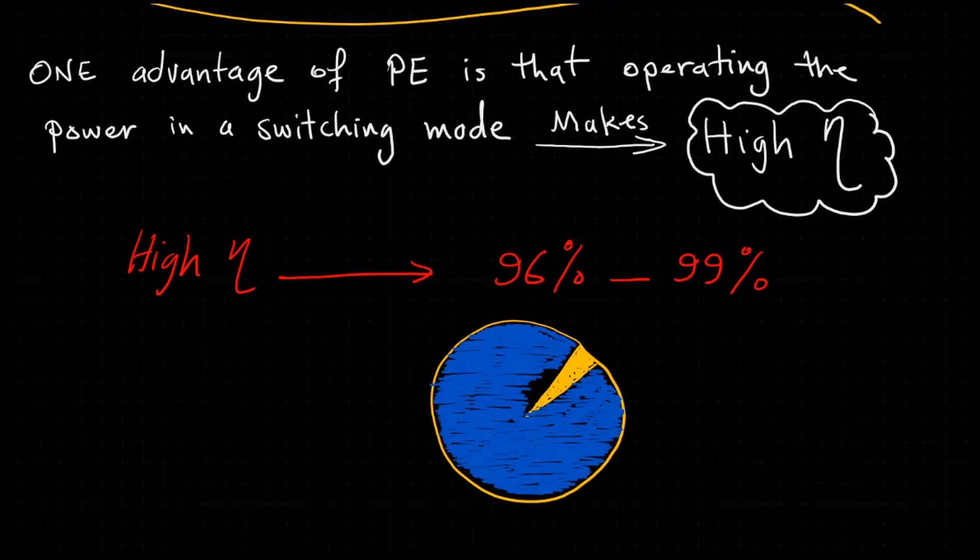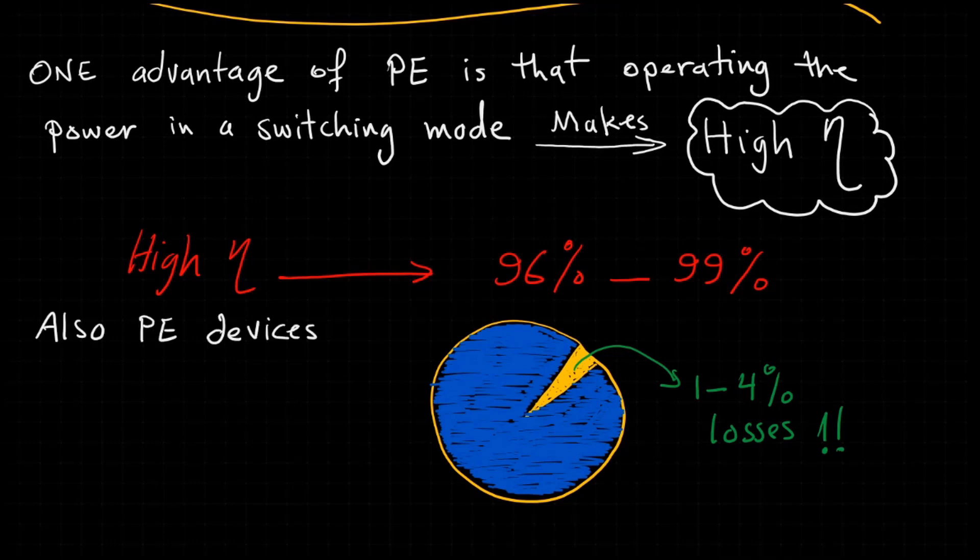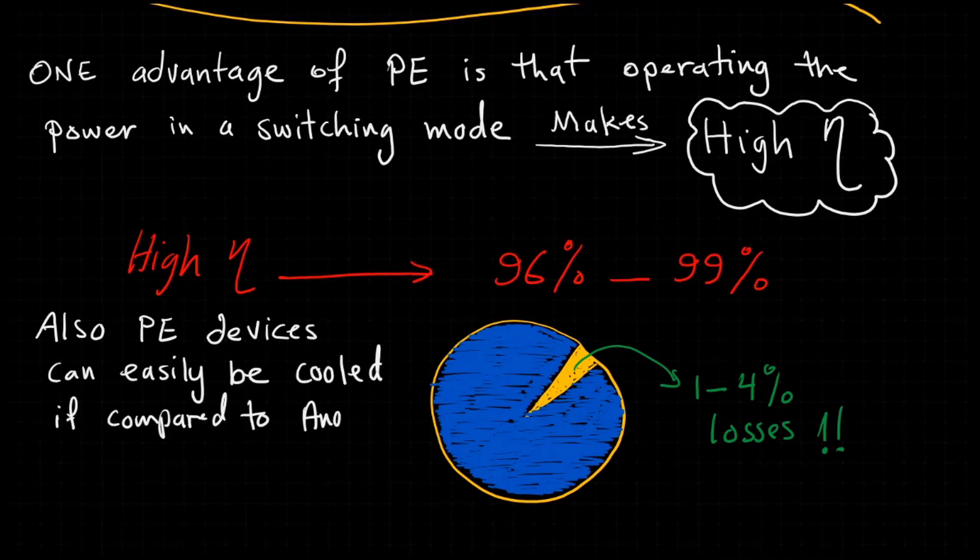One percent losses in high power electronics means a huge amount of power, so if we manage to save small fractions, that's a big saving. Also, power electronics devices can easily be cooled if you compare them to analog or digital electronics.